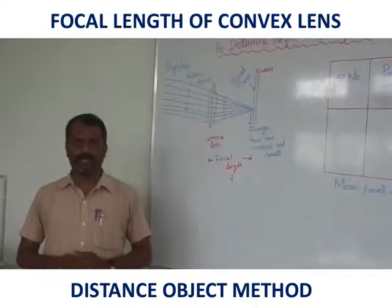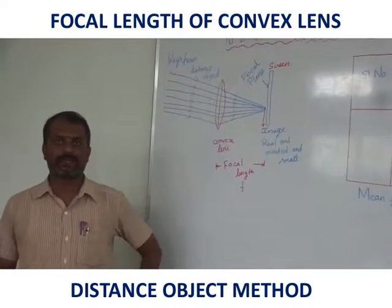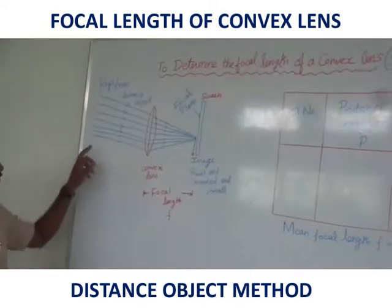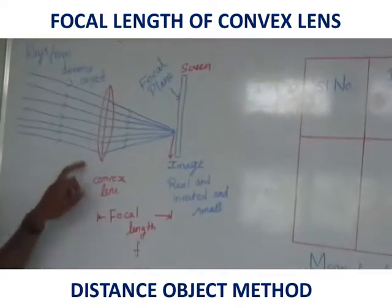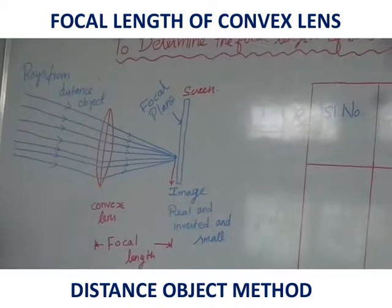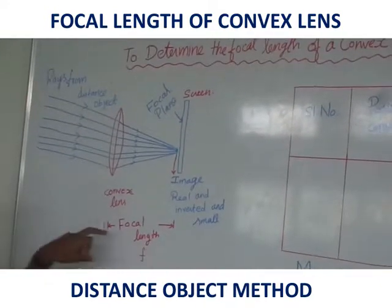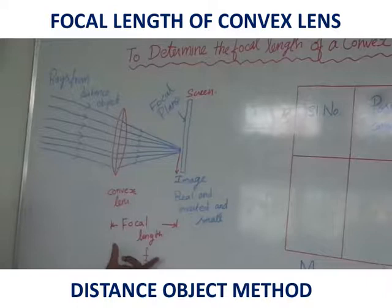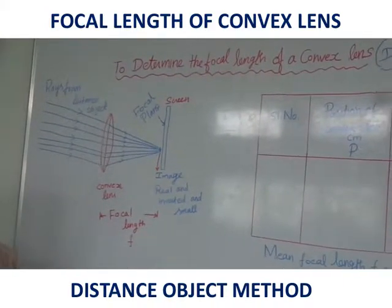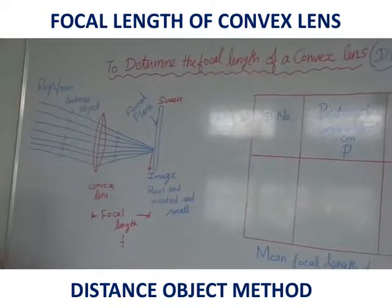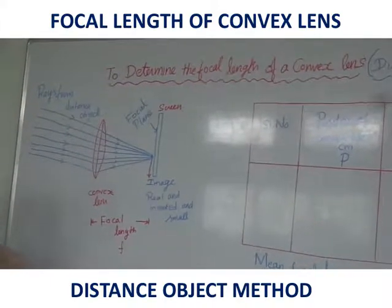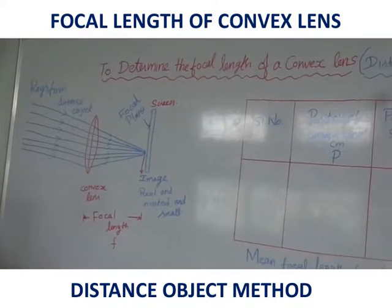Here we see how to find the focal length of the convex lens. Rays from a distant object pass through the convex lens and converge onto the focal plane. The distance between the focal plane and the lens is called the focal length. The importance of finding focal length is that the image forms clearly only on the focal plane, so we need to determine the focal length to find a clear image.